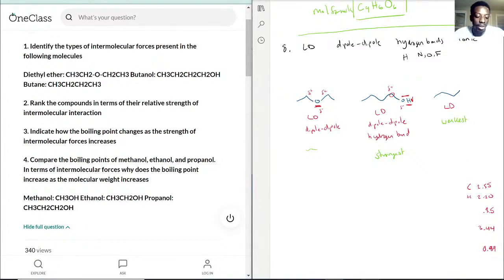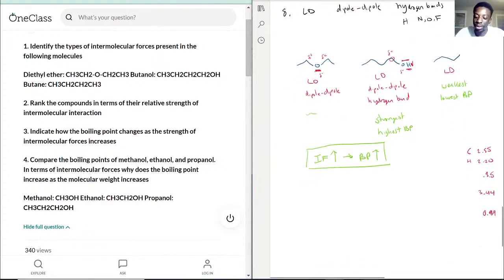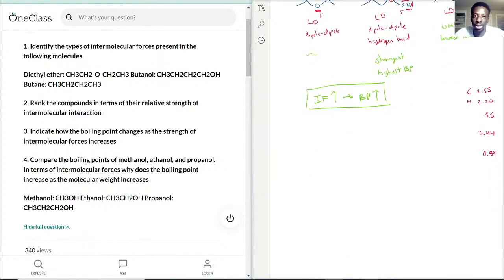Let's address indicating the boiling point. The boiling point changes as the strength of intermolecular forces increases. As you increase the intermolecular force, the boiling point increases. This would be the highest boiling point, and this would be the lowest, because as IF increases, boiling point increases. Write that down somewhere, because this comes into play many times. As you increase intermolecular forces, it's harder to boil—you need a lot higher temperature.